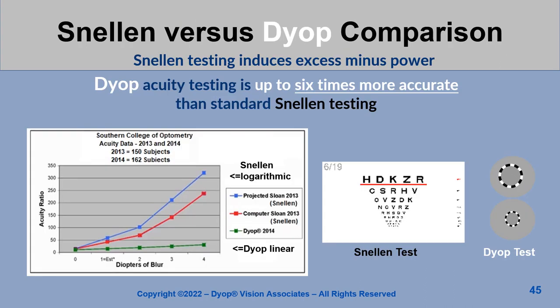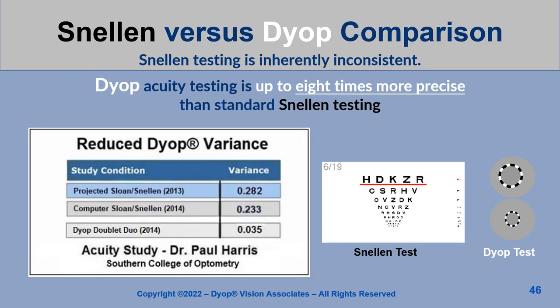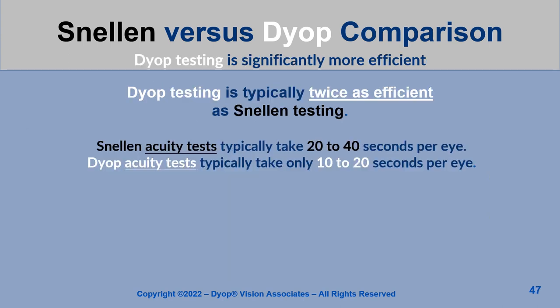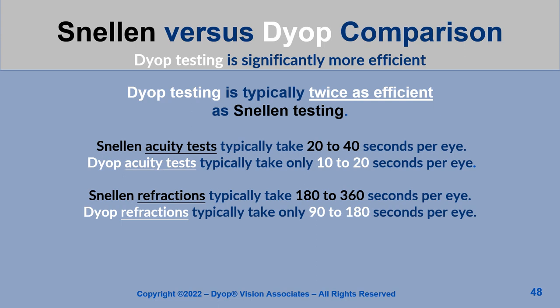As a result, dyop acuity testing is up to 6 times more accurate and up to 8 times more precise than standard Snellen testing. Dyop testing is also typically twice as efficient as Snellen testing. Dyop acuity tests typically take only 10 to 20 seconds per eye, and dyop refractions typically take only 90 to 180 seconds per eye.